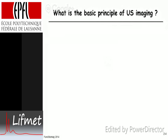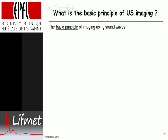The basic principle of ultrasound imaging is that you emit a sound pulse. The pulse length, which is typically one to five microseconds, has to be a multiple of the cycle time — that's one over the frequency of the ultrasound. The duration has to be long enough so that it has a well-defined frequency. If it's too short, it's the same as taking a hammer and knocking it on a table — you get the white spectrum, everything. But you want a defined frequency.